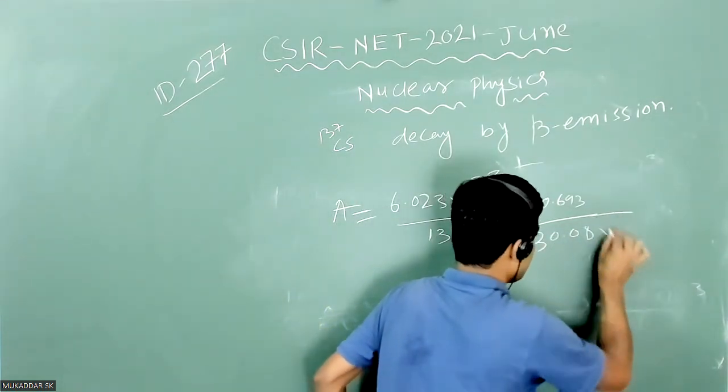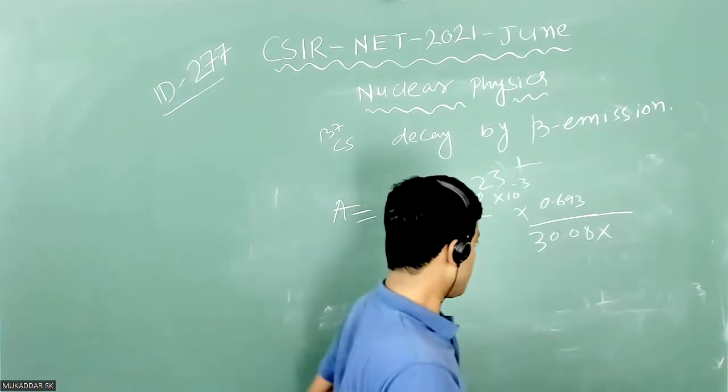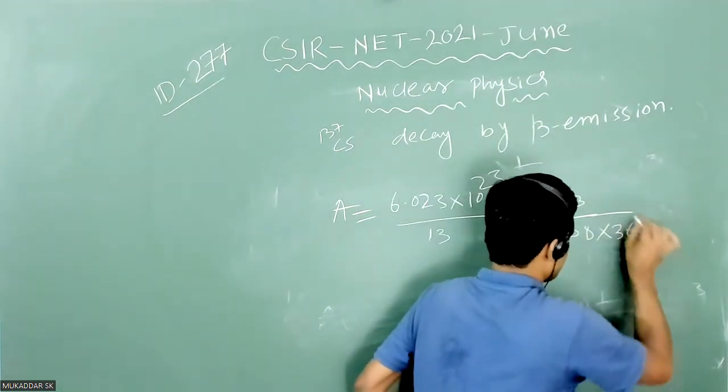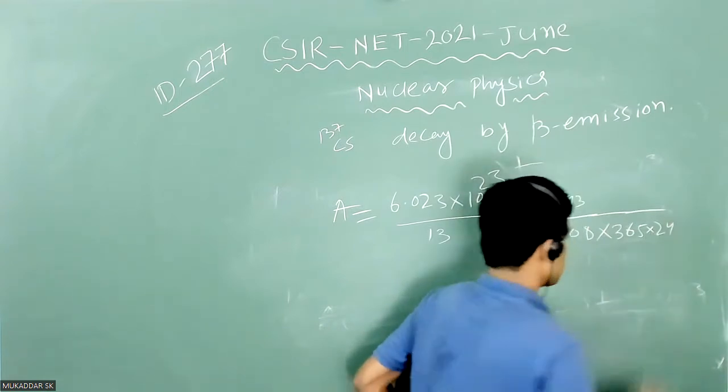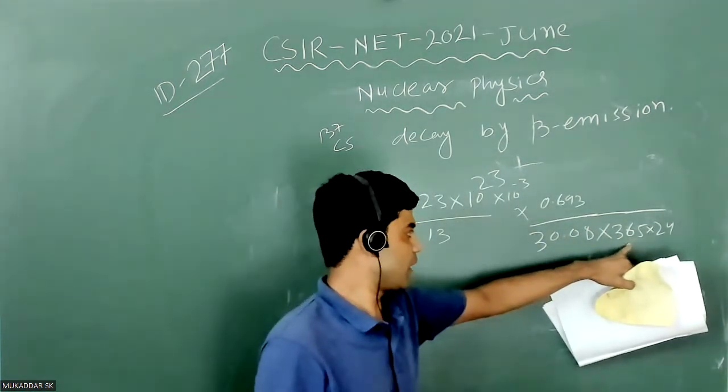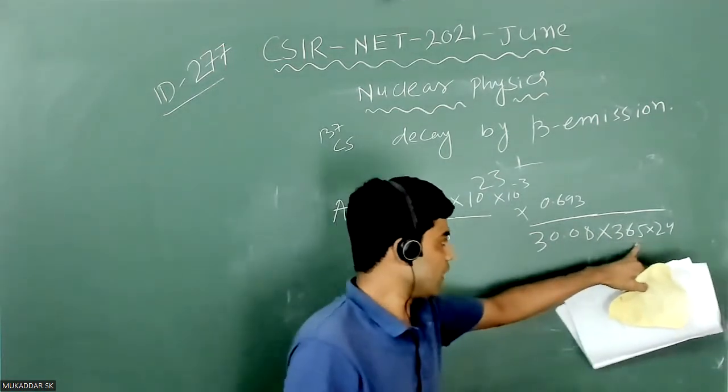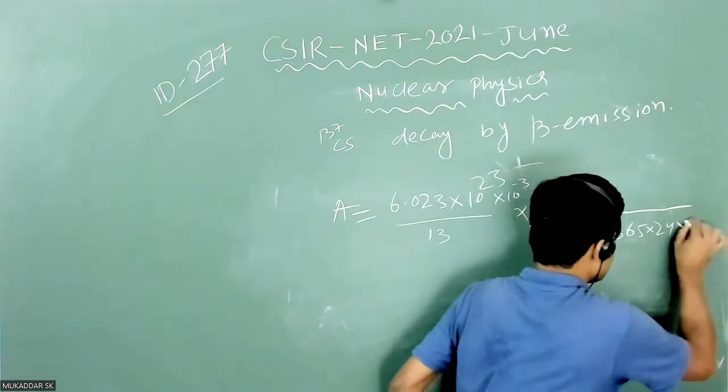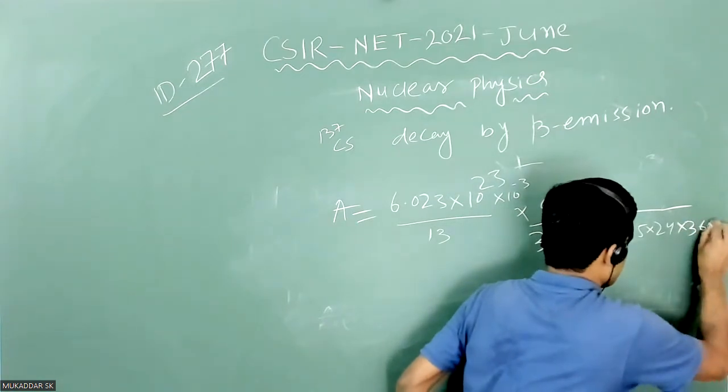To convert it into seconds, multiply by 365×24×3600. Multiplying by 365 converts years to days, then 24×3600 converts days to seconds.